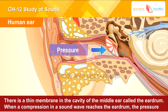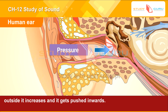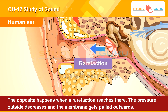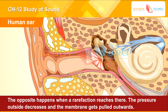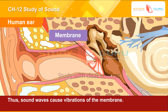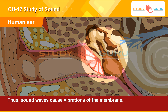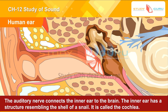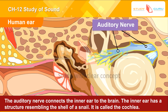When a compression in a sound wave reaches the eardrum, the pressure outside it increases and it gets pushed inwards. The opposite happens when a rarefaction reaches there — the pressure outside decreases and the membrane gets pulled outwards. The sound waves cause vibrations of the membrane.